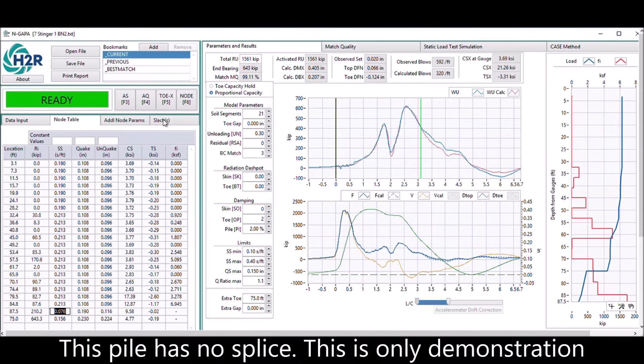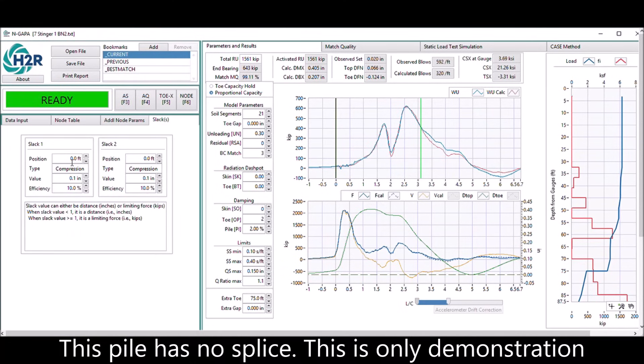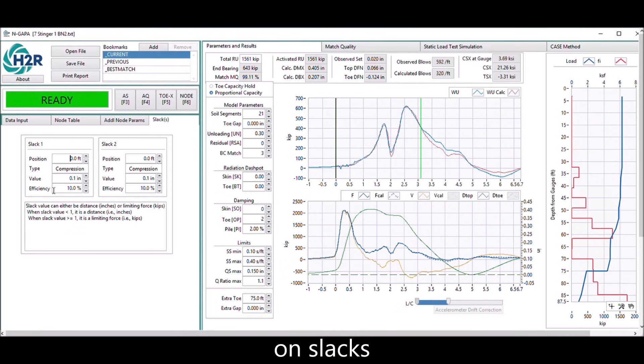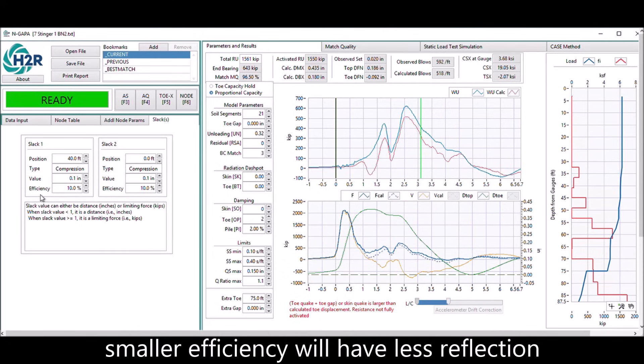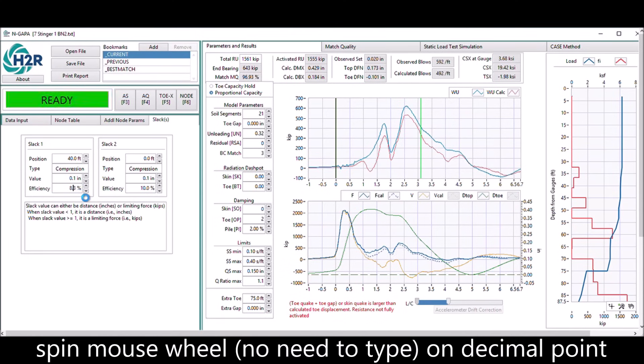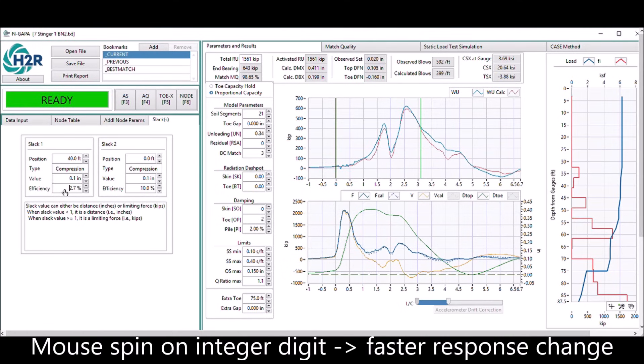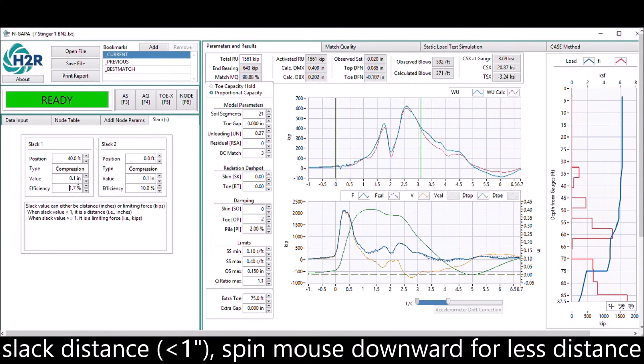This pile doesn't have any splice, but let me demonstrate the slag here to represent the splices in lieu of the impedance reduction. After typing in the position of the slag, you see a big drop there, because the efficiency is too high. You can scroll, use the mouse to scroll the efficiency down. And if you put the mouse on the first digit, the scroll here would be much faster.